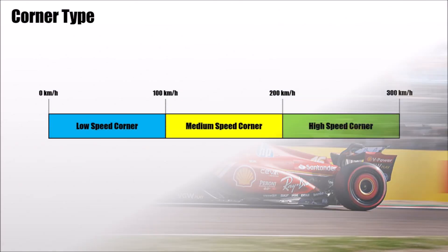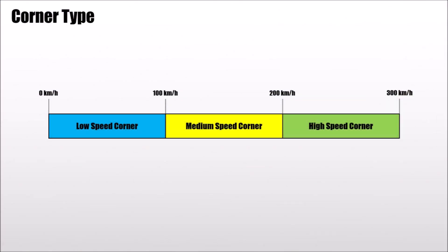Roughly speaking, a low speed corner is up to 100 km per hour. A high speed corner is above 200 km per hour. Everything in between is a medium speed corner.